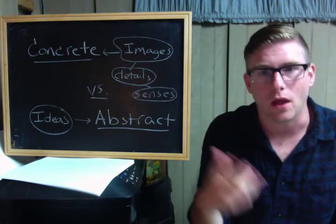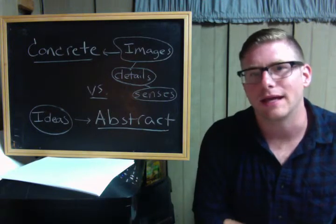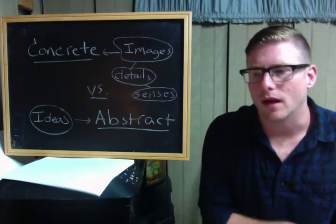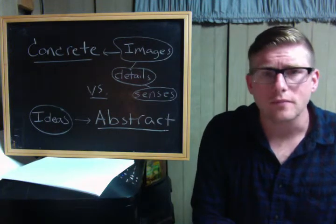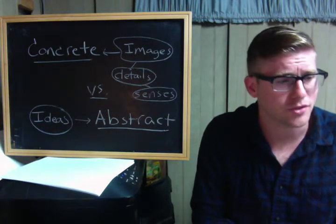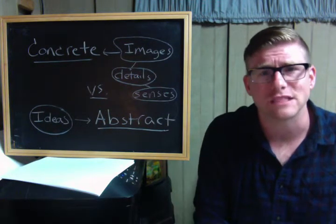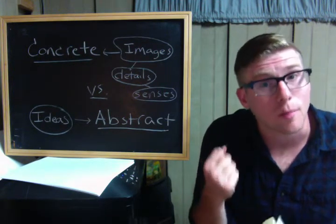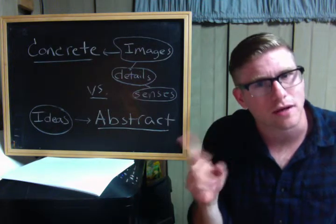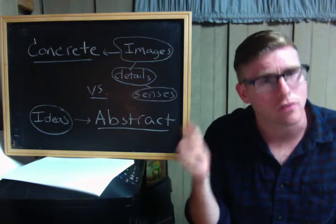Other abstract things: love, the concept of love, the concept of a god or some kind of higher being, justice, liberty, freedom. These are abstract concepts. Very, very important concepts, but abstract nonetheless, because we can't see them. They're not concrete.